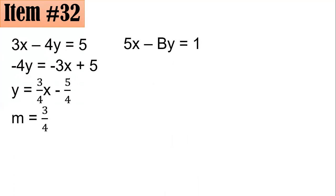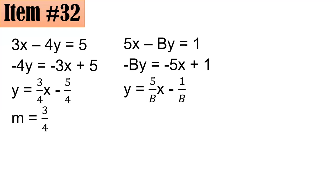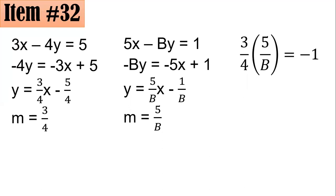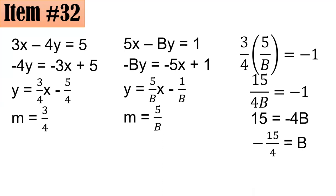Using similar reasoning on the second equation, 5x minus by equals 1: subtract 5x from both sides to get negative by equals negative 5x plus 1, then divide both sides by negative b to get y equals (5/b)x minus 1/b. So the slope is 5/b. Since the lines are perpendicular, the product of their slopes equals negative 1: (3/4)(5/b) equals negative 1, giving 15 over 4b equals negative 1, so multiplying gives 15 equals negative 4b, thus b equals negative 15/4, which is letter d.